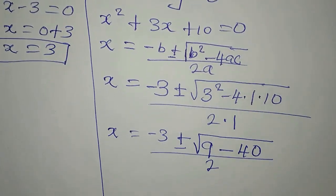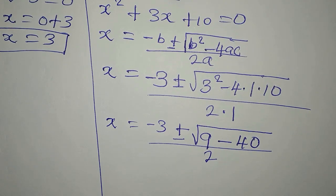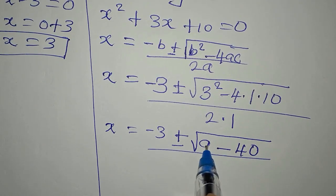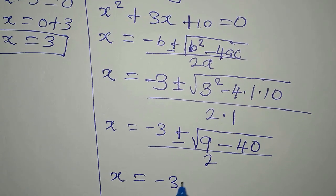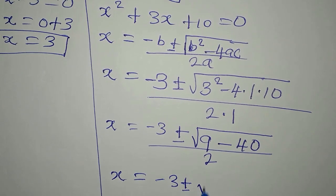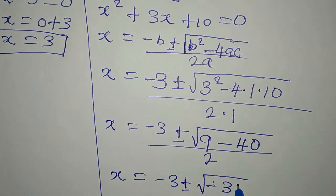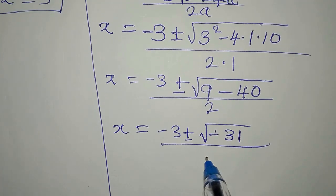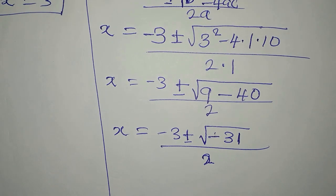Do not find the square root of 9 and the square root of 40 separately — subtract first before finding the square root. So x equals minus 3 plus or minus the square root of 9 minus 40, which gives us minus 31. The whole expression is over 2. Remember, this is negative 31 under the square root.